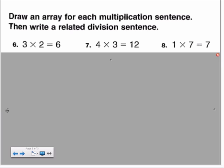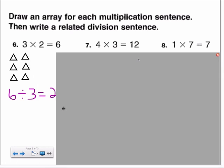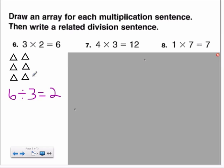We can then use this to draw an array of our own. I chose to use triangles in my array, so I arranged three rows of triangles with two triangles in each row. I then wrote the related division sentence: six counters in all, divided into three rows, equals two counters in each row.